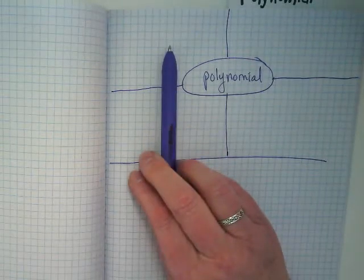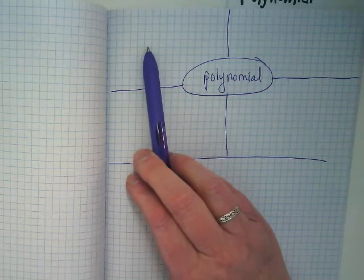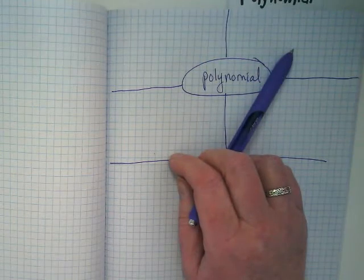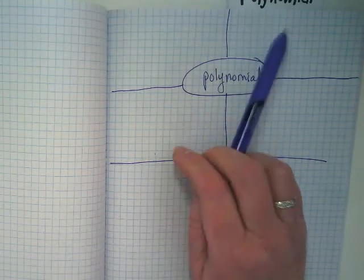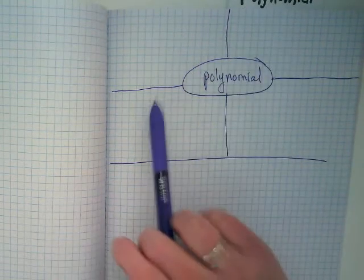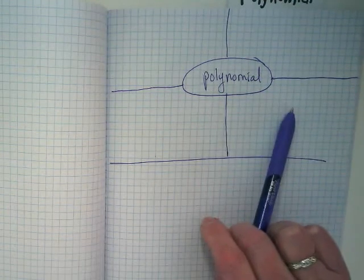Who recalls what goes in this square or this corner of a frame model? Definition. What about this side? This is usually like characteristics. Down here, examples. And over here, non-examples. Perfect.